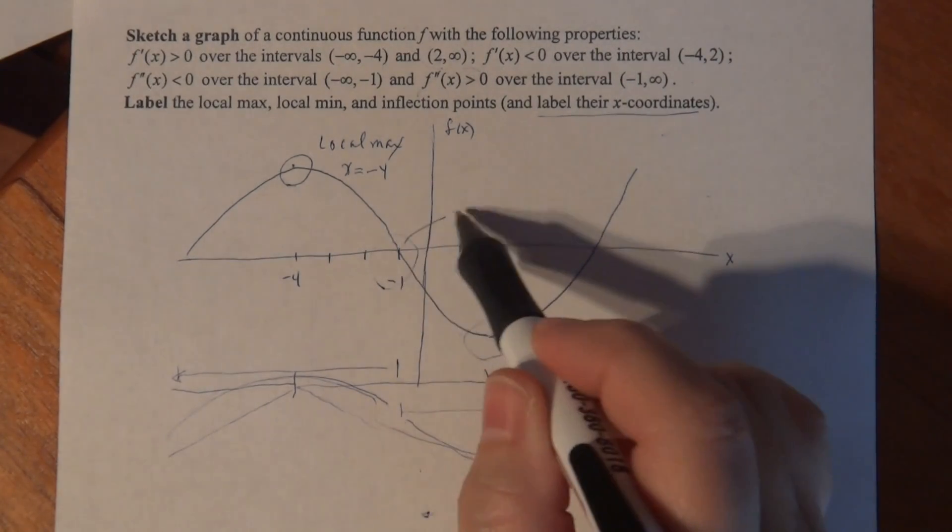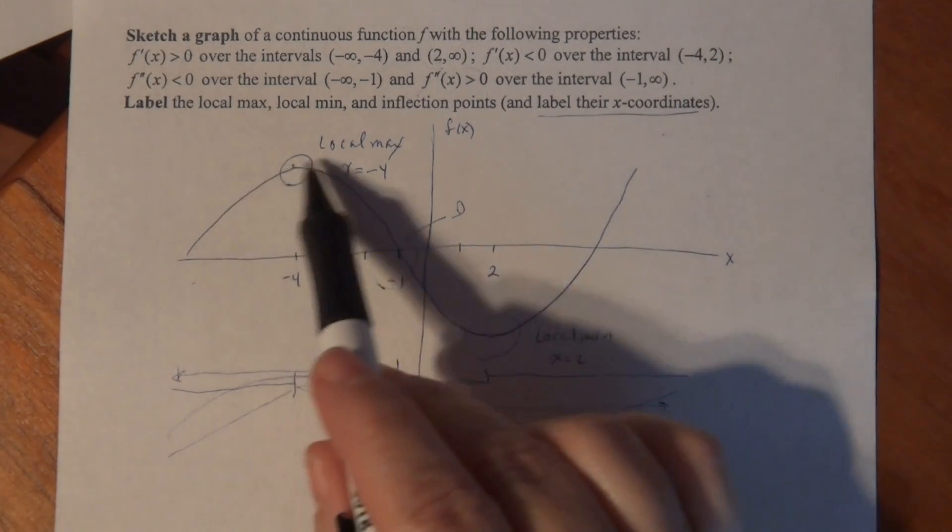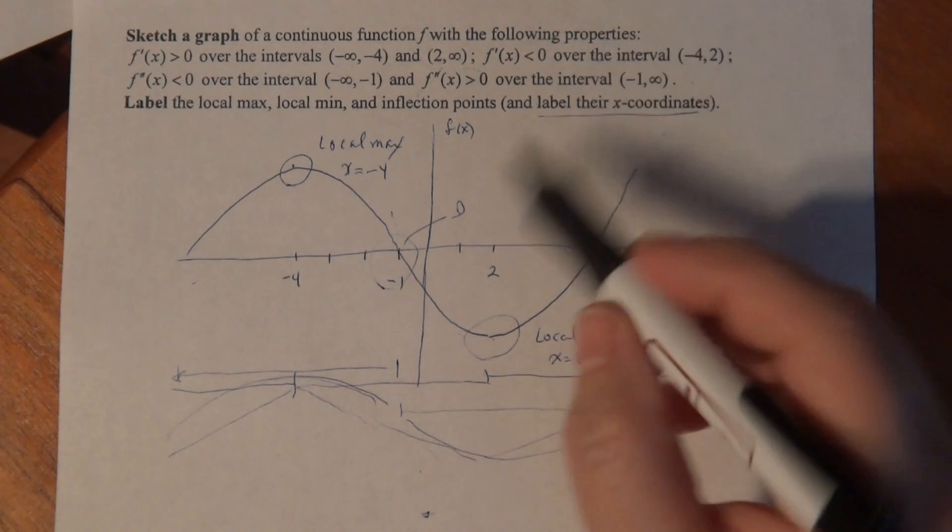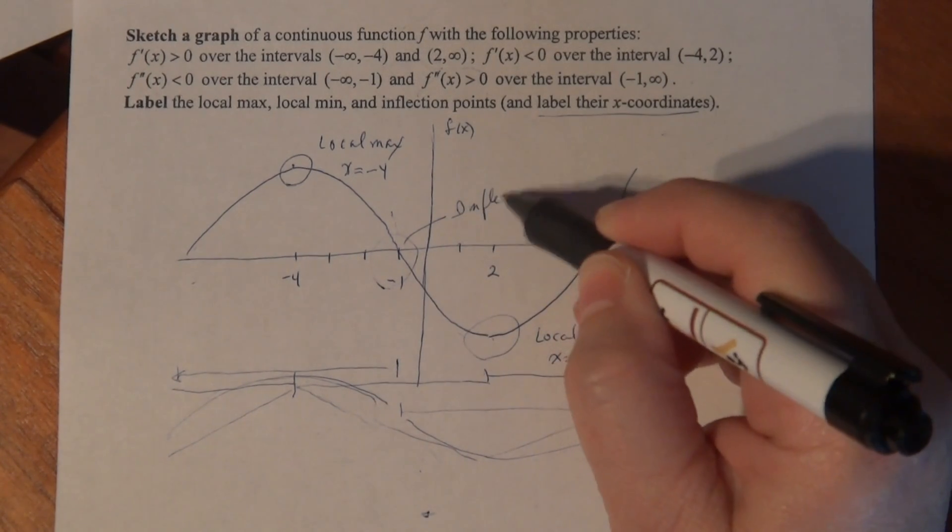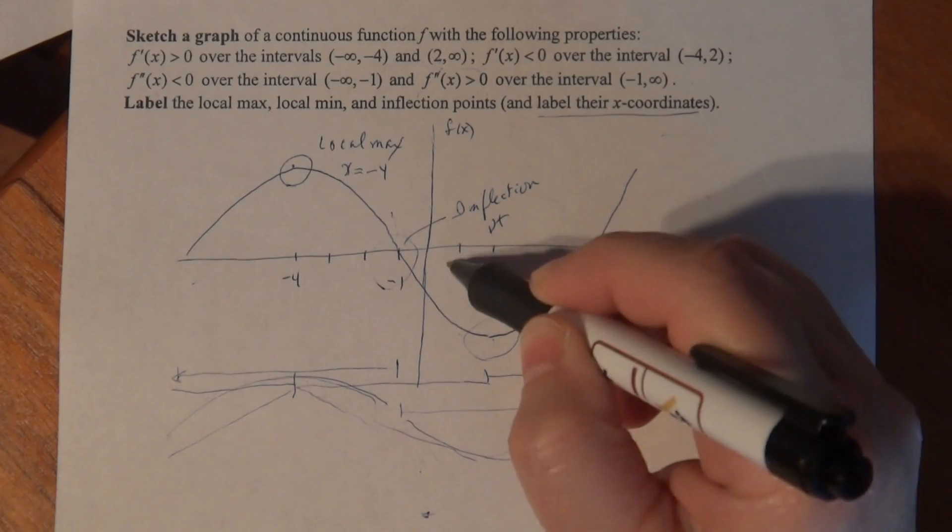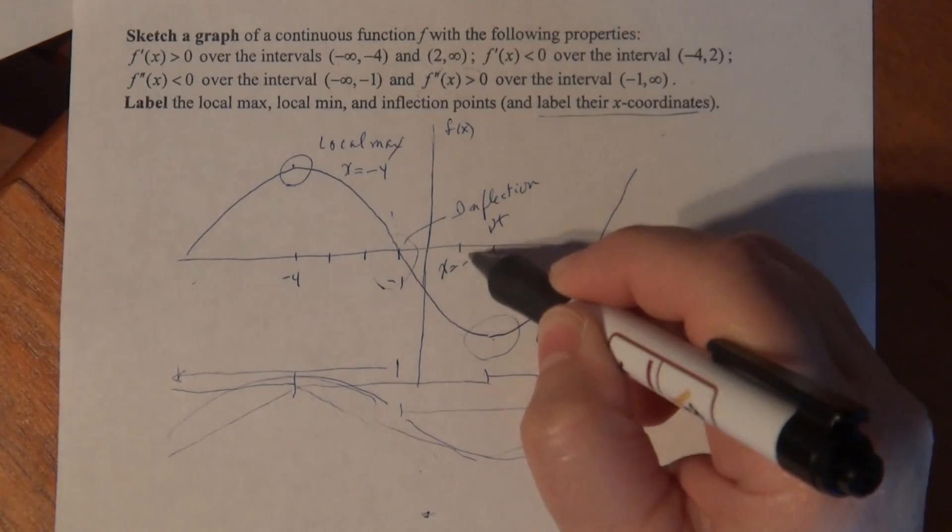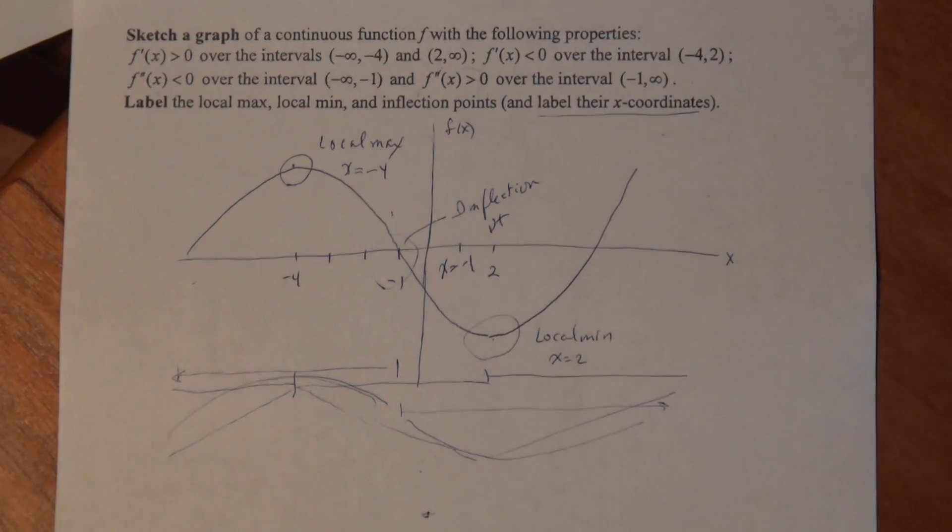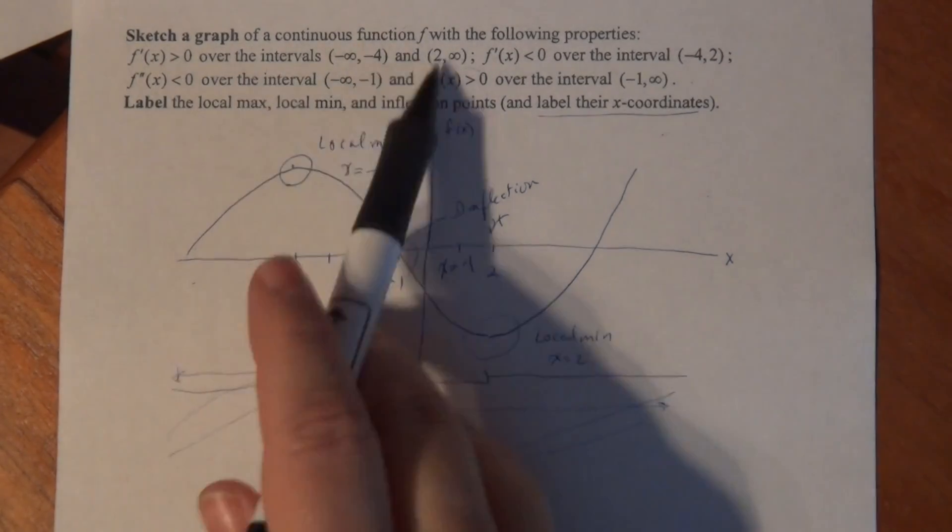And then here in the middle, that's my inflection point. Notice the concavity changes from concave down to concave up. That's my inflection point. And I'm going to label it x equal minus 1. So I believe I've completed the entire problem and have created a graph of f that has all of these characteristics.